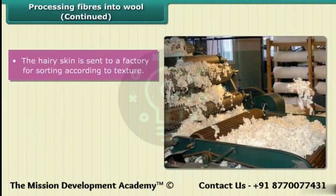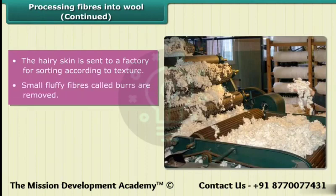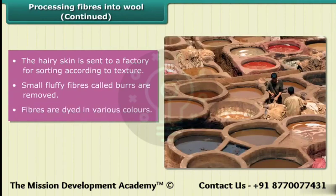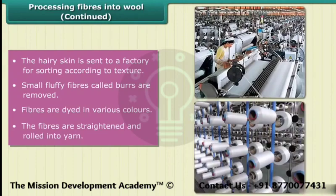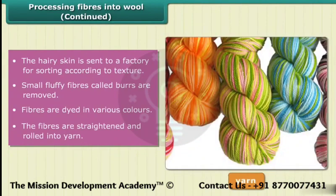At the factory, hairs of different textures are separated or sorted. The small fluffy fibers called burrs are picked out from the hair. The fibers are then dyed in various colors, since the natural fleece of sheep comes in black, brown, or white. Finally, the fibers are straightened and rolled into yarn, and the wool is ready to use.